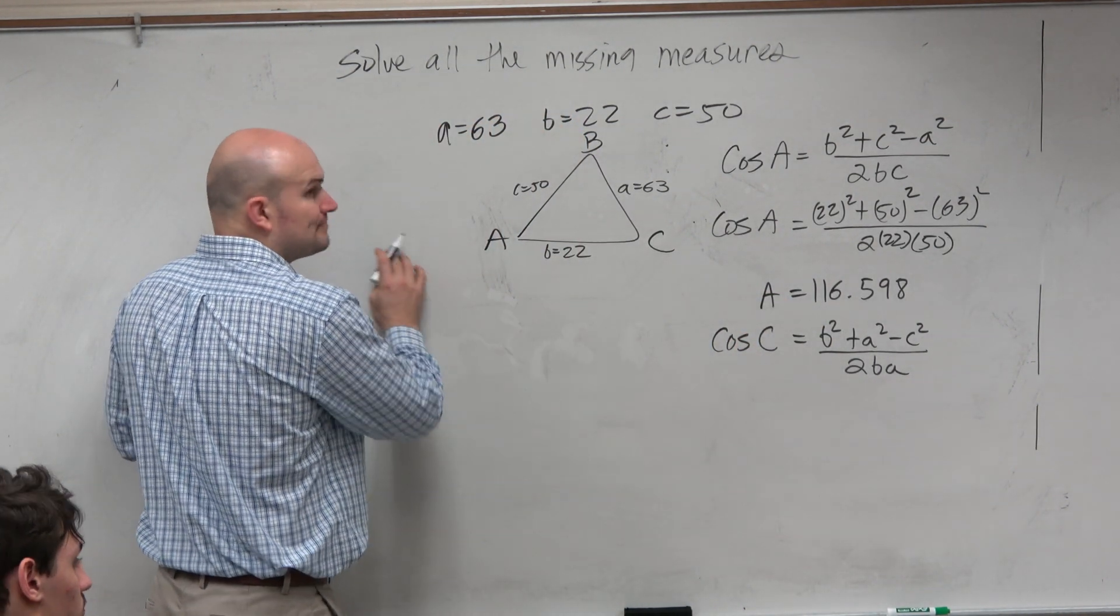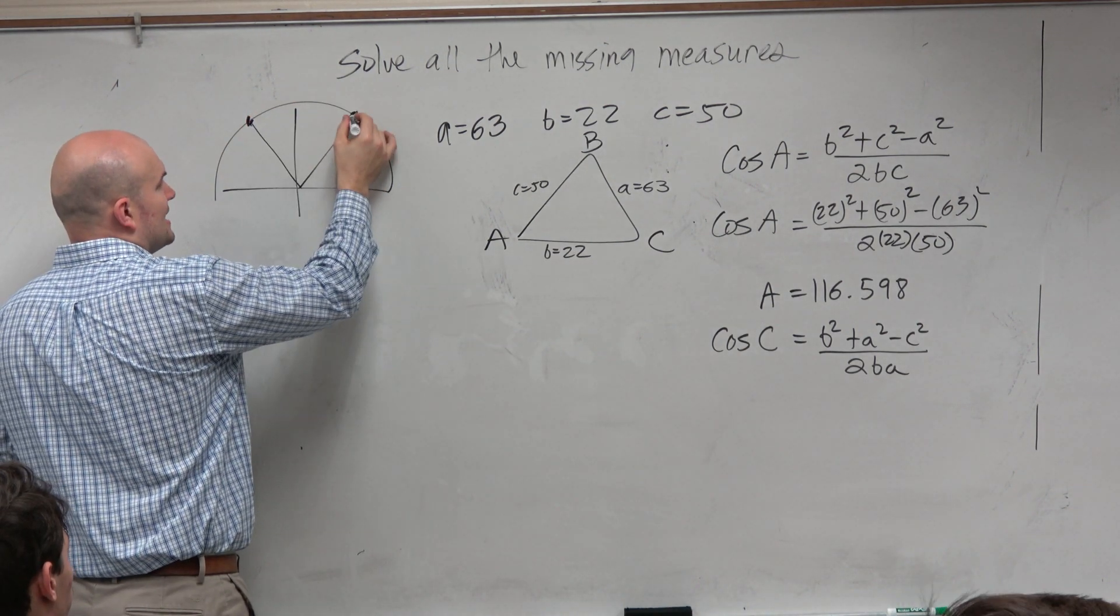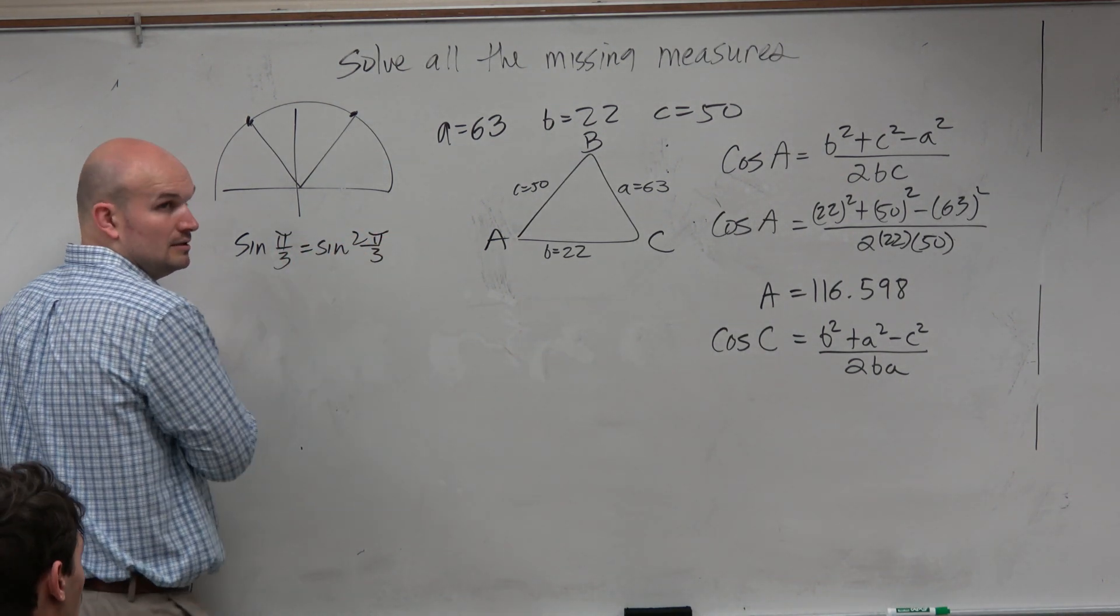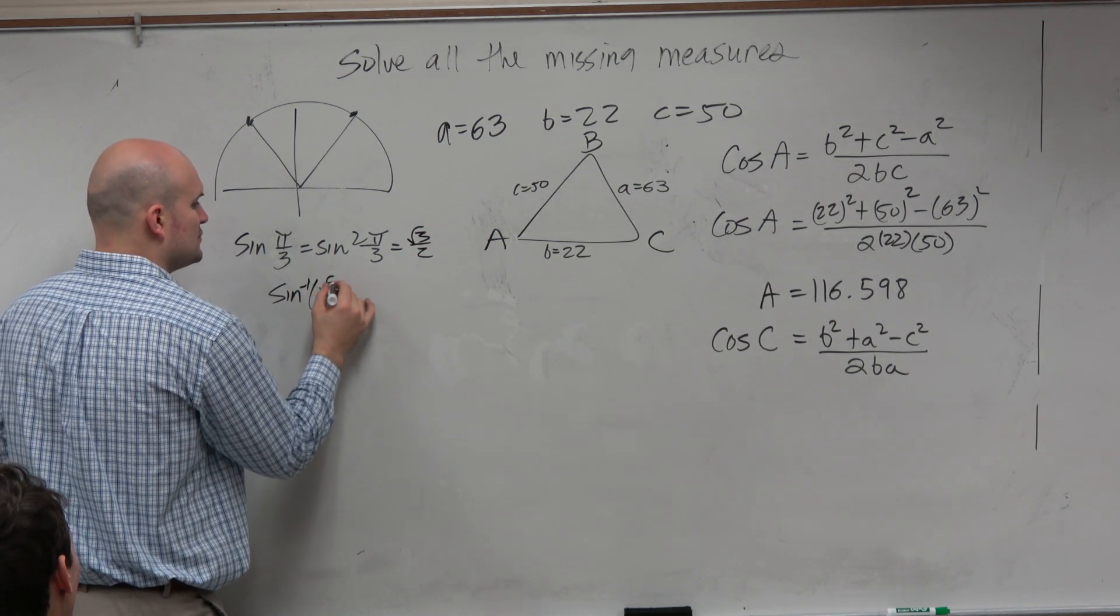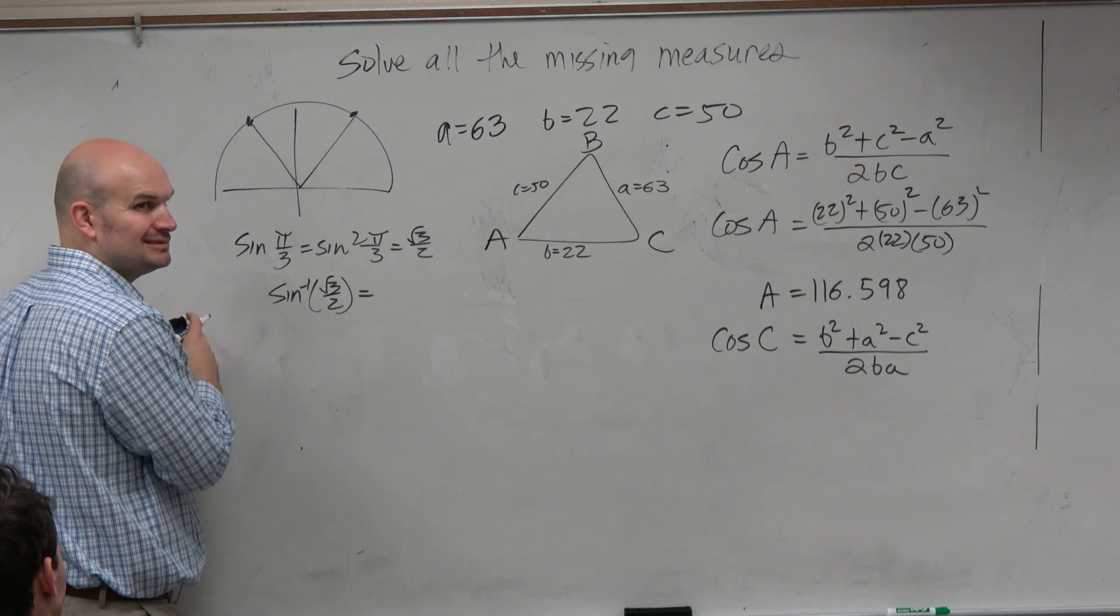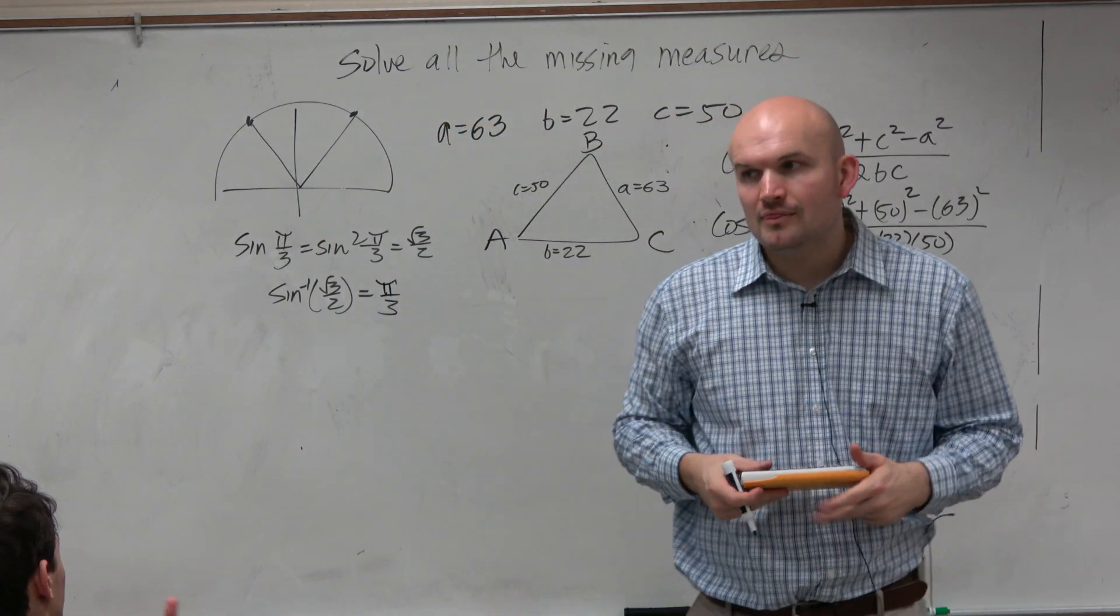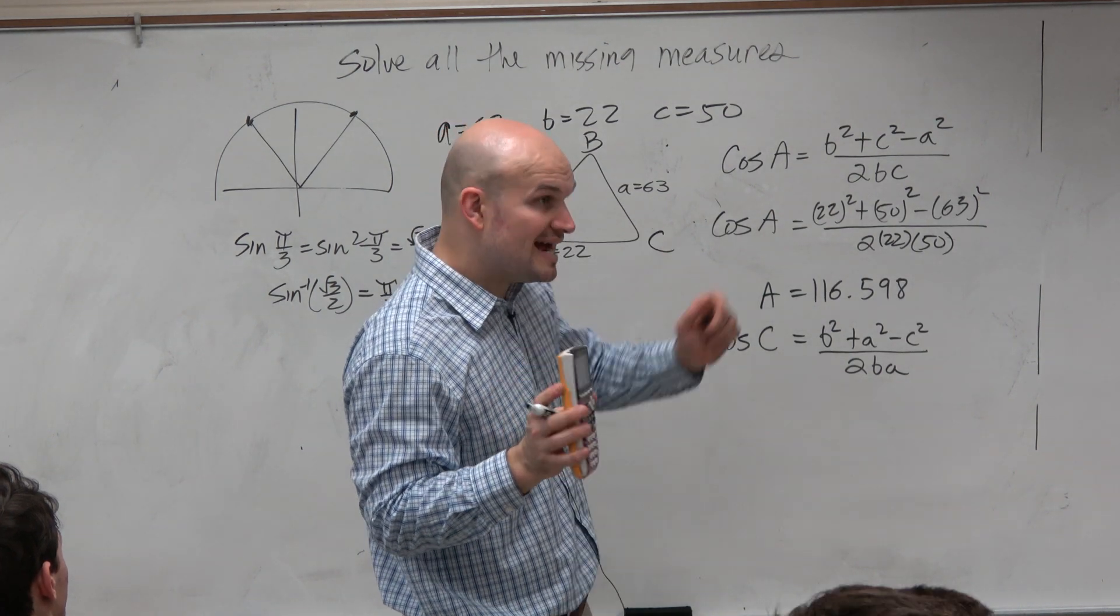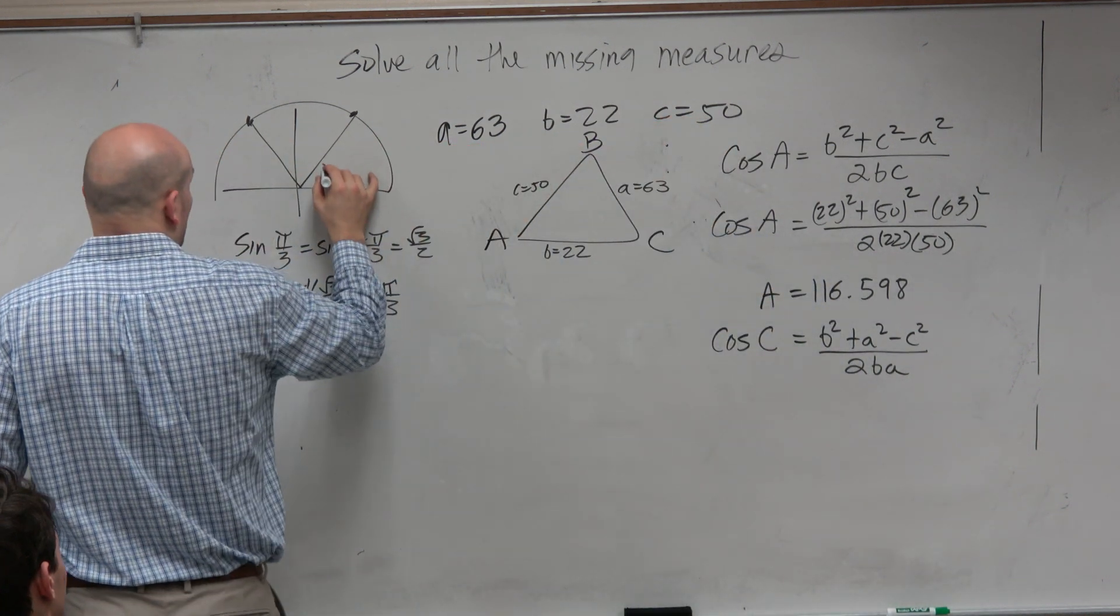The reason why is, look at two angles for sine. Sine of pi over 3 is equal to the sine of 2 pi over 3, which is equal to the square root of 3 over 2. However, the sine inverse of square root of 3 over 2 is equal to what? It's pi over 3. So the problem is, when you guys type in sine inverse on your calculator, because when you guys were going to do the Law of Sines, you have to use sine inverse. Sine inverse is only going to give you the acute angle. Sine inverse does not give you the possibility of the obtuse angle.